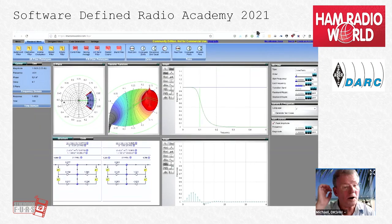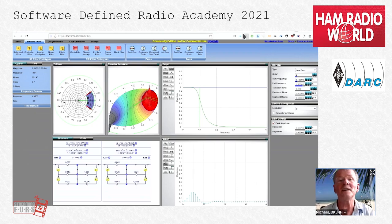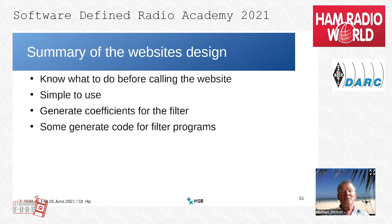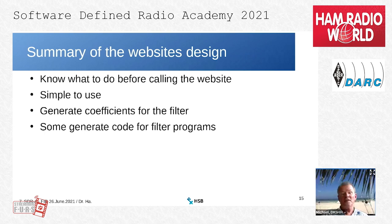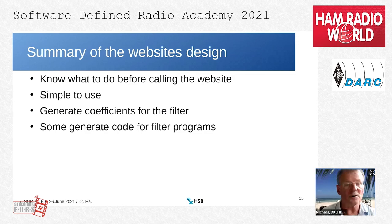The last tool shown is for own experimentation — it's more complex and requires time to understand. The summary for the website design tools: know what to do before using the website. We should know how to design a digital filter. The application of design tools is very simple, as demonstrated — they generate coefficients for filters and some generate code for filter programs to apply the result of the design process.